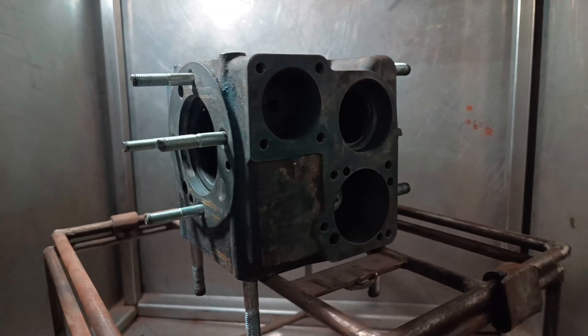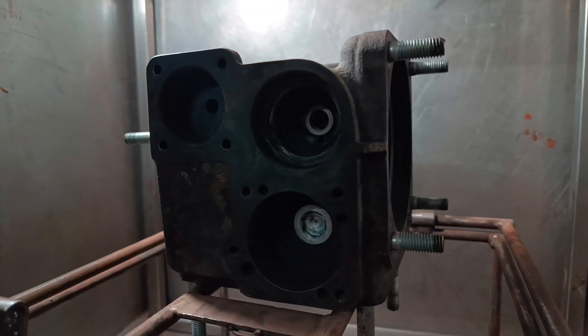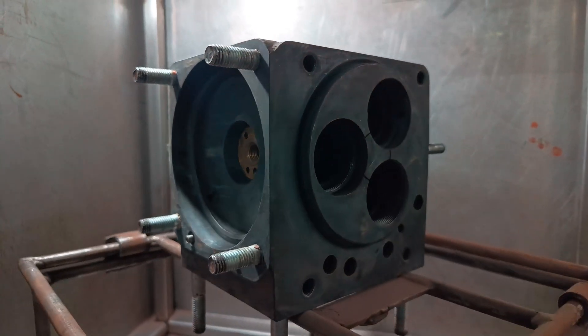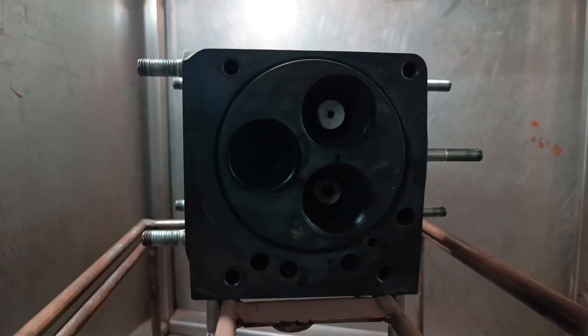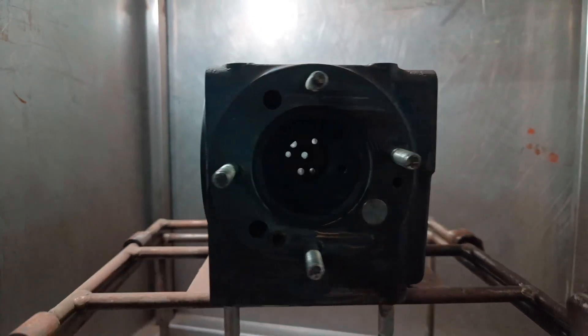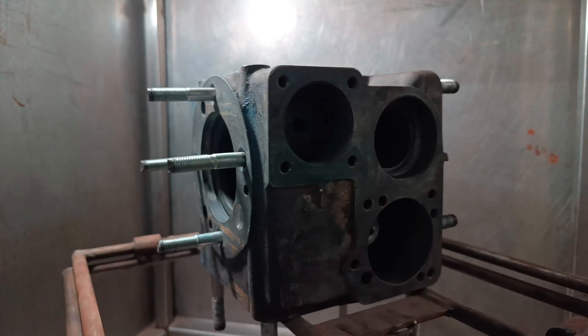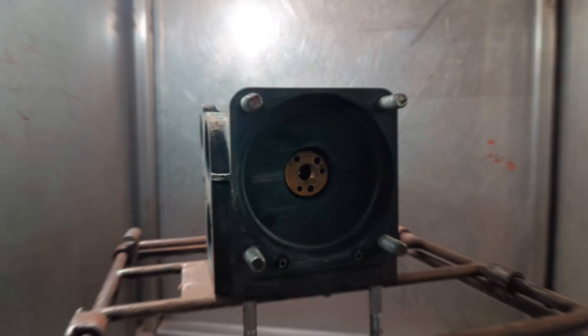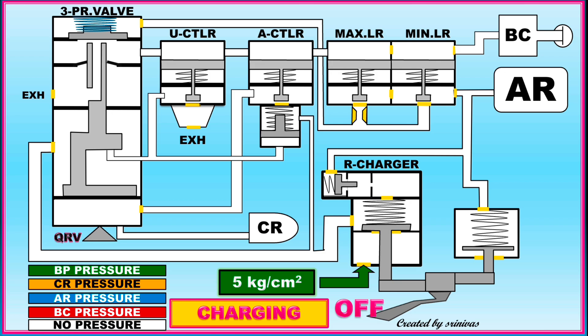This is the shell of the KE type distributor valve in which air flow paths of BP, AR, BC, and CR are designed inbuilt. An air flow chart was designed and animated for easy understanding of these air flow paths.